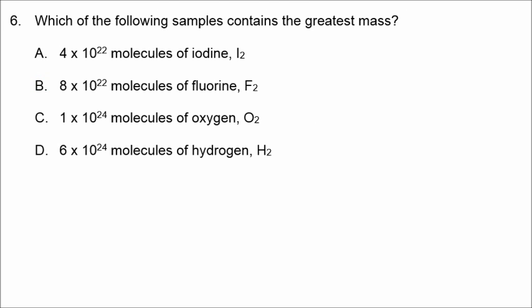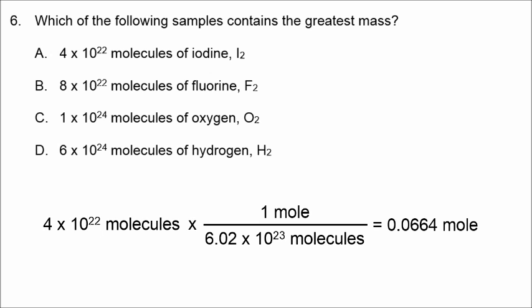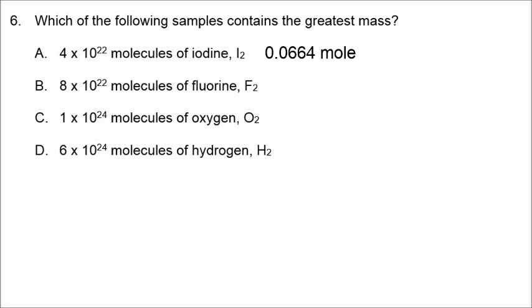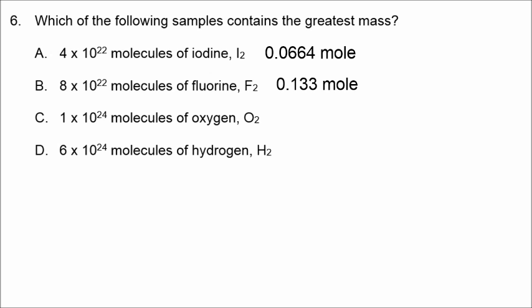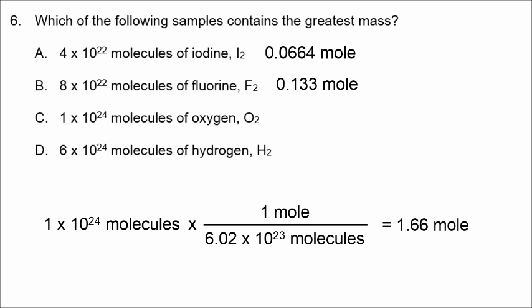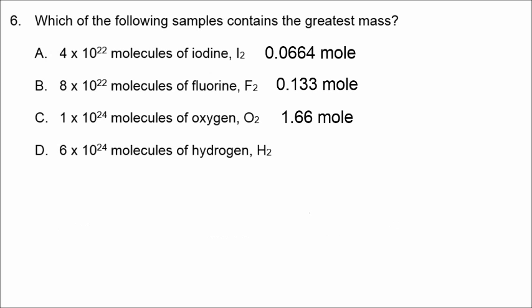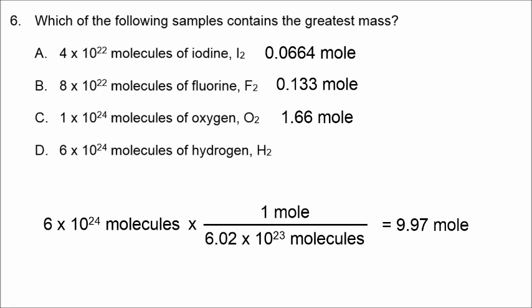In number 6, we have to convert from particles into grams. That's a two-step conversion. So, first, I'm going to convert from particles to moles by dividing by Avogadro's number. And when I do that for part A, I get 0.0664 moles of iodine. For part B, I get 0.133 moles of fluorine. When I do that calculation for part C, I get 1.66 moles of oxygen. And then finally, the conversion from particles to moles, I get 9.997 moles of hydrogen.